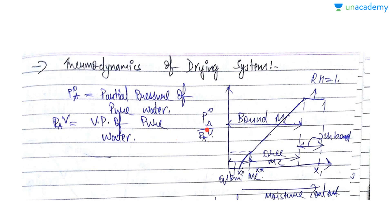Relative humidity is always shown by P°A divided by PAB, where P°A is the partial pressure of pure water and PAB is the vapor pressure of pure water. So partial pressure upon vapor pressure is known as the relative humidity.